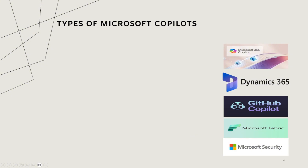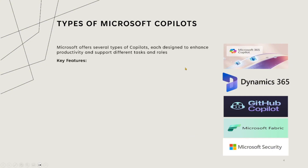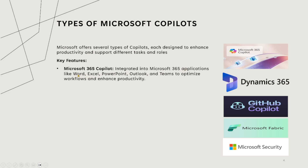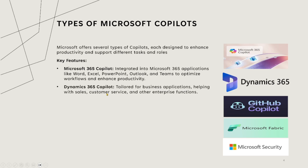What are the different types of Co-Pilots? Microsoft offers several types. Microsoft 365, which is Office 365 — Co-Pilot is built into Word, Excel, PowerPoint, Outlook, and all those things. Dynamics 365 Co-Pilot: Dynamics 365 is the business suite of applications for Microsoft, broadly covering two categories — ERP, Enterprise Resource Planning, similar to SAP, and CRM, Customer Relationship Management, similar to Salesforce. Microsoft provides a Co-Pilot for both ERP and CRM modules.